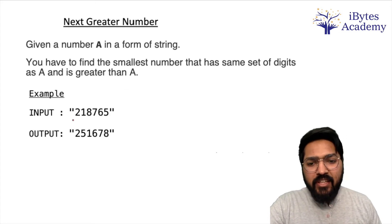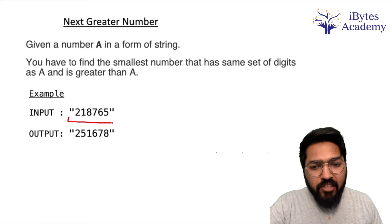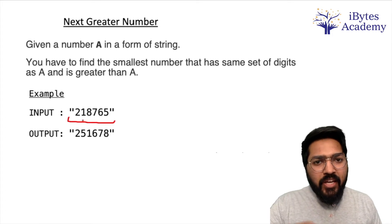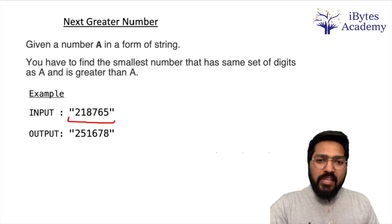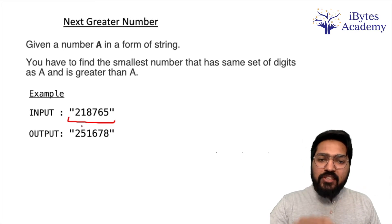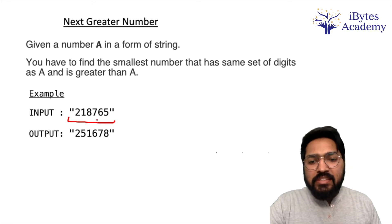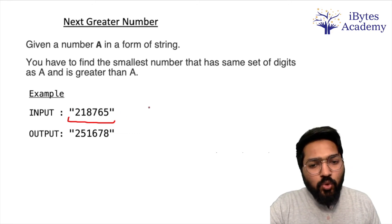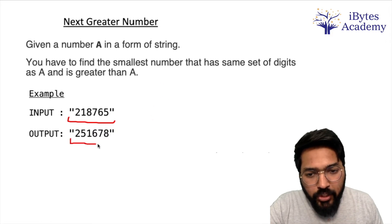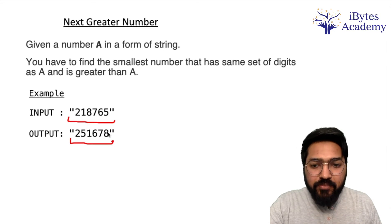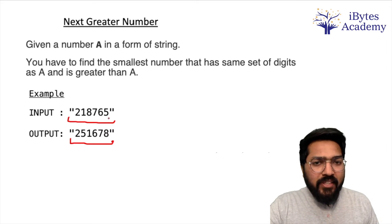Basically, we are given a number in the form of a string. Out of all the possible permutations of this number, we have to pick the permutation which is just greater than the original number. For example, there can be many permutations, total six factorial permutations are possible, but out of this we need the permutation which is just greater than it. So I hope the problem statement is clear.